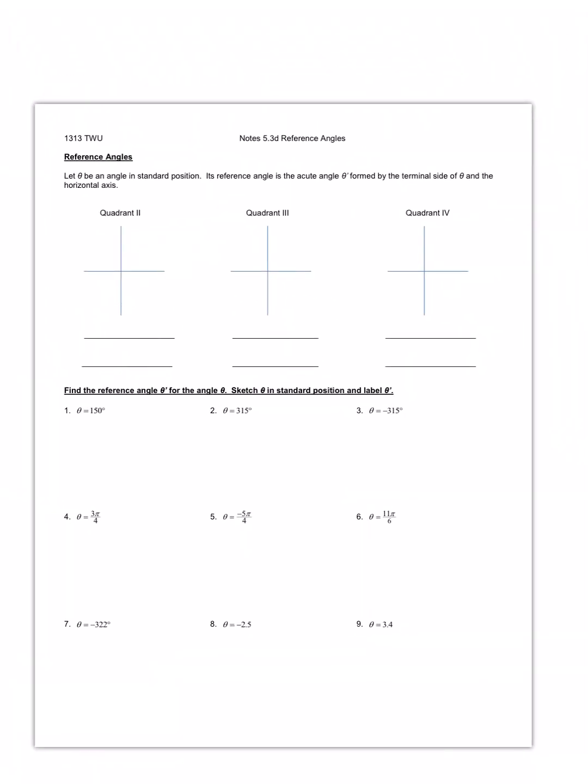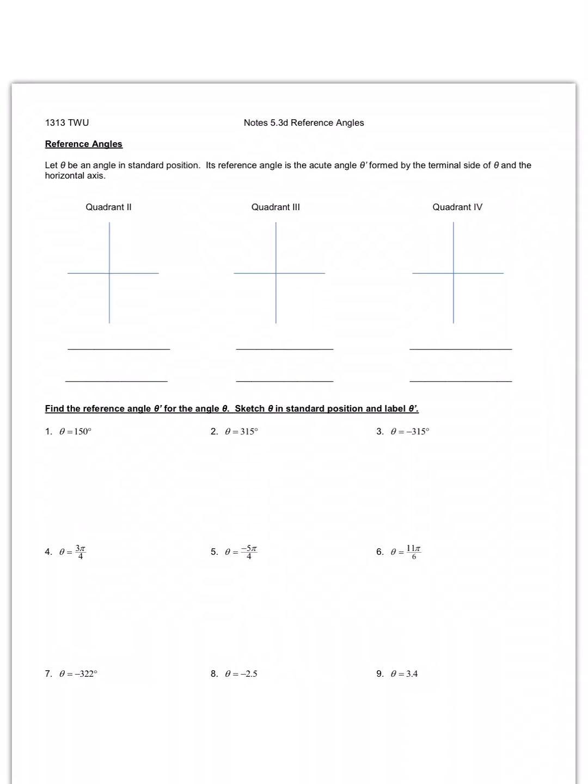In this section of 5.3, we're going to talk about how to find our reference angles. So if theta is an angle in standard position, its reference angle is the acute angle theta prime formed by the terminal side of theta and the horizontal axis.